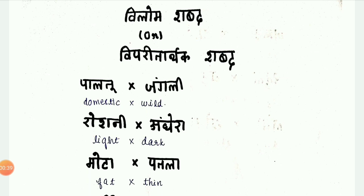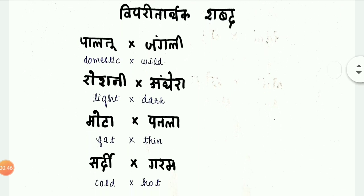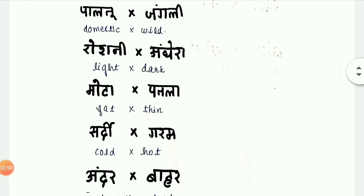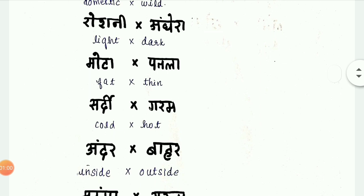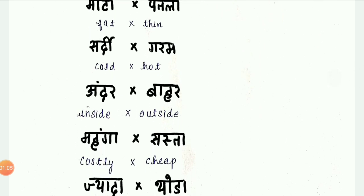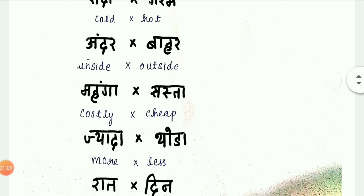Palthu / Jungli — Palthu means Domestic, Jungli means Wild. Roshni / Andhera — Roshni means Light, Andhera means Dark. Mota / Patla — Fat / Thin. Sardhi / Garam — Cold / Hot. Andher / Bahar — Inside / Outside. Mahanga / Sasta — Costly / Cheap. Jyada / Thoda — More / Less.